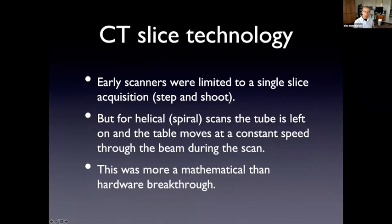And so these early CT scanners were limited to a single slice. Now we use what's called helical or spiral scanning. The way this is done is rather than do a so-called step-and-shoot where we turn the device on, we scan one slice, move on, now this tube is just left on, and the table is moved through the scanner at a constant speed. But this was not really a hardware breakthrough. This was a mathematical breakthrough.